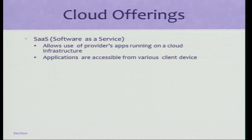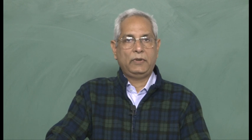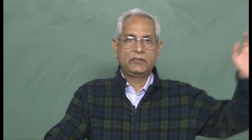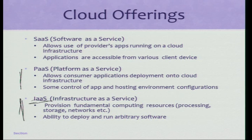If you look at the cloud, there are basically three kinds of service offerings. These are called software as a service, platform as a service, or infrastructure as a service. Infrastructure as a service is basically renting a machine on the web. Instead of buying a machine and putting it in your own data center with uninterrupted power supply and 24x7 security, you basically rent a machine which is somewhere in a data center. Instead of getting a bare machine, you can get a machine with some software — middleware like database engines — already loaded on it. That is platform as a service.